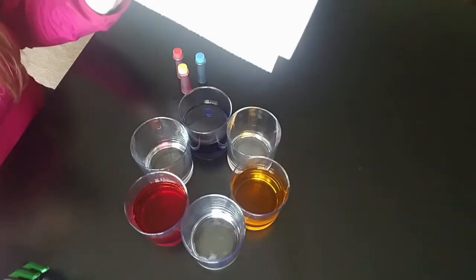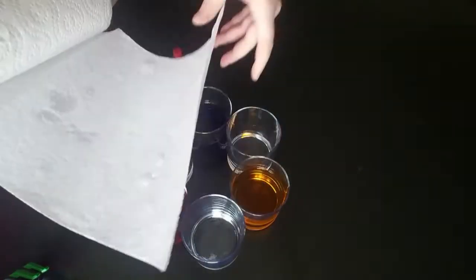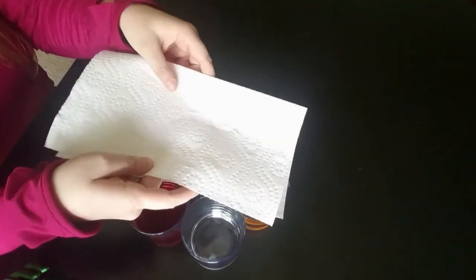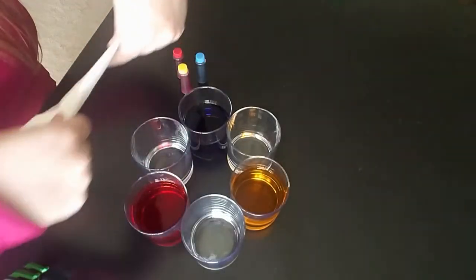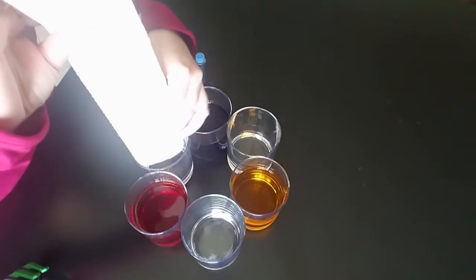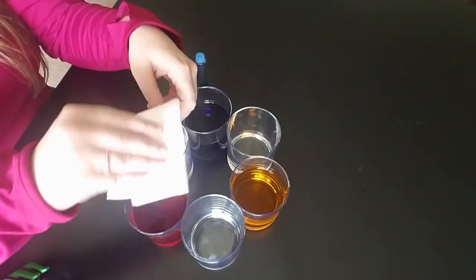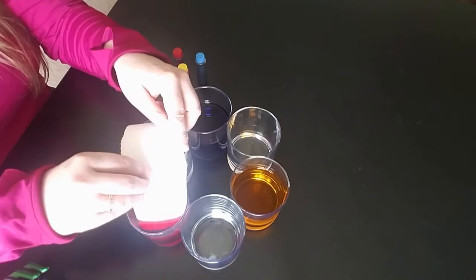You will then take your paper towels, rip off one or two sheets at a time. You're going to fold them once, fold them twice, and put one end in an empty cup and the other end in a cup with a color.